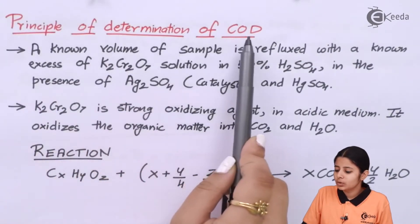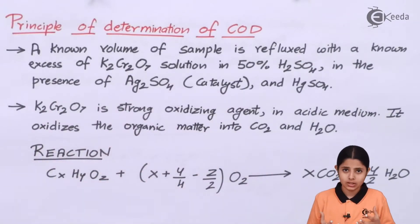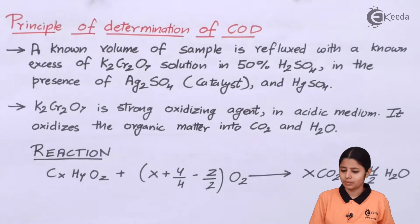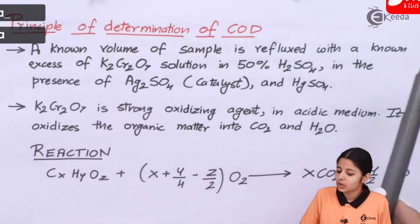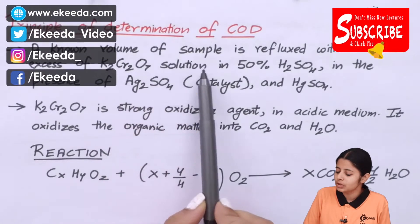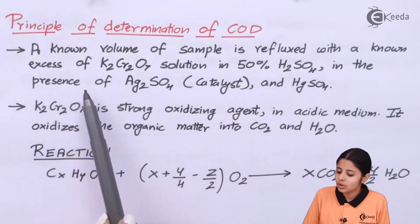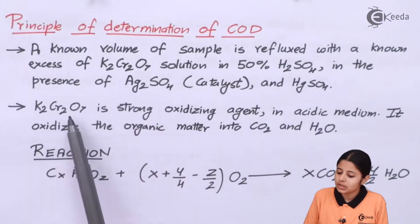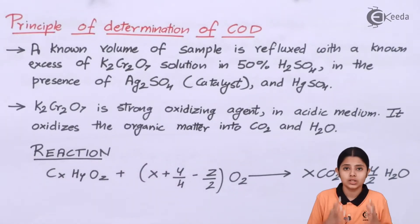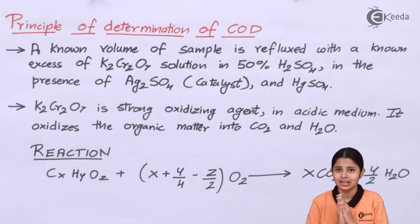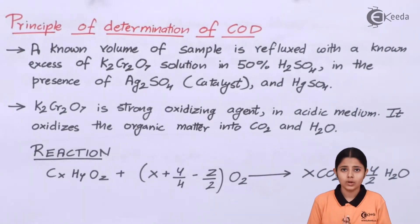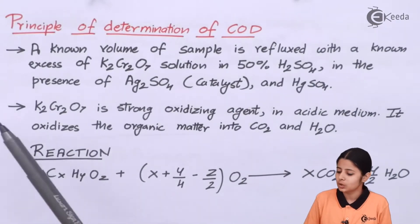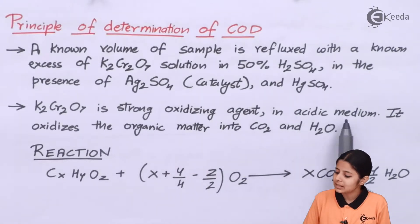Principle of determination of COD: a known volume of sample is refluxed with a known excess of K2Cr2O7 solution in 50% H2SO4 in the presence of Ag2SO4 as the catalyst and HgSO4. K2Cr2O7 is a strong oxidizing agent. For COD we need a strong oxidizing agent, and here we use K2Cr2O7 in acidic medium — it oxidizes the organic matter into CO2 and H2O.